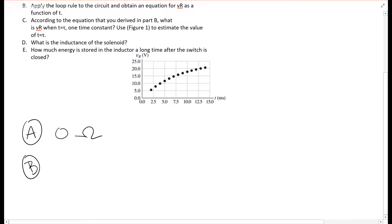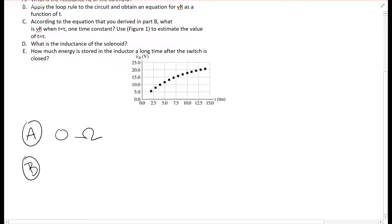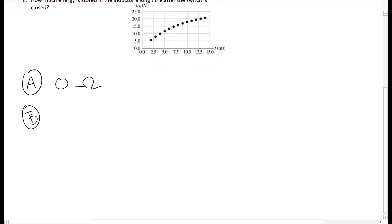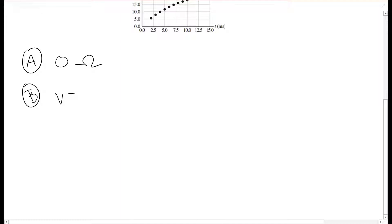Second part is asking, apply the loop rule to the circuit and obtain an equation for Vr as a function of t. We don't actually need to apply the loop rule, but you do have to look into your textbook to find a nice equation. So we know that V equals IR, and if you look in your equation, you can get this equation for I, the current.